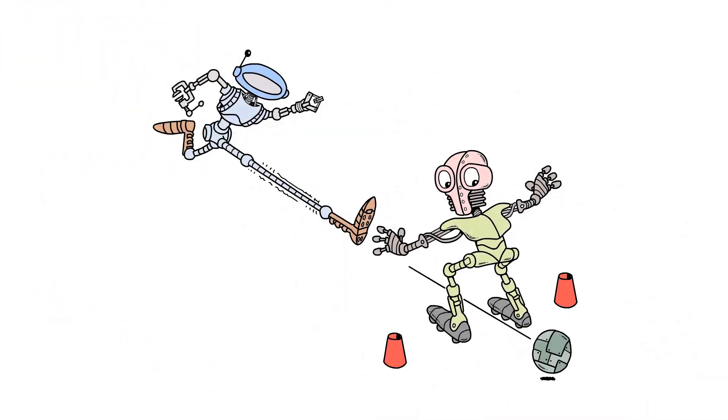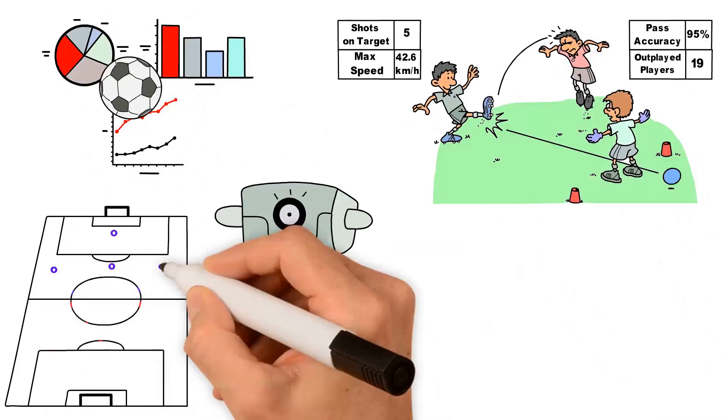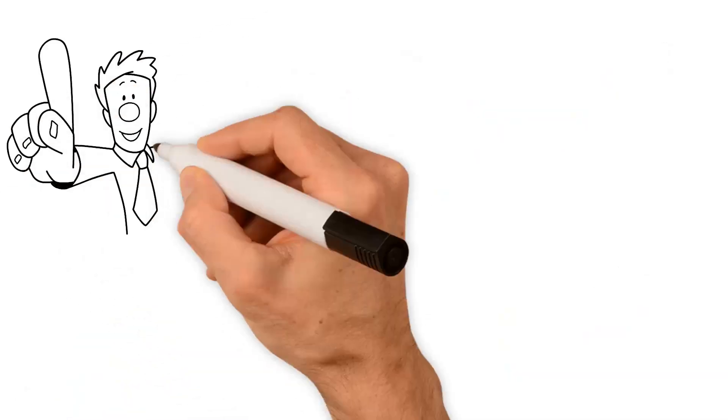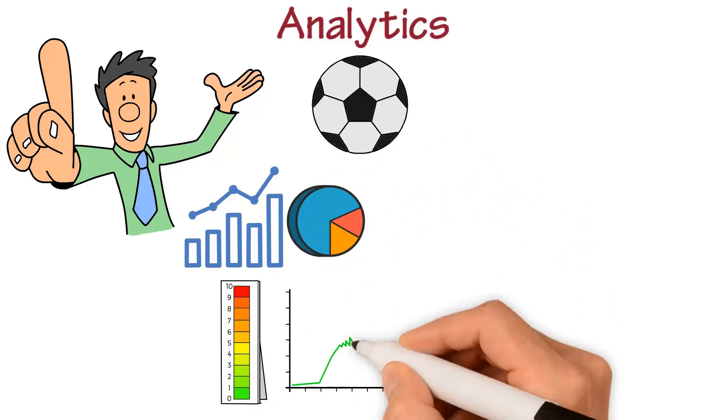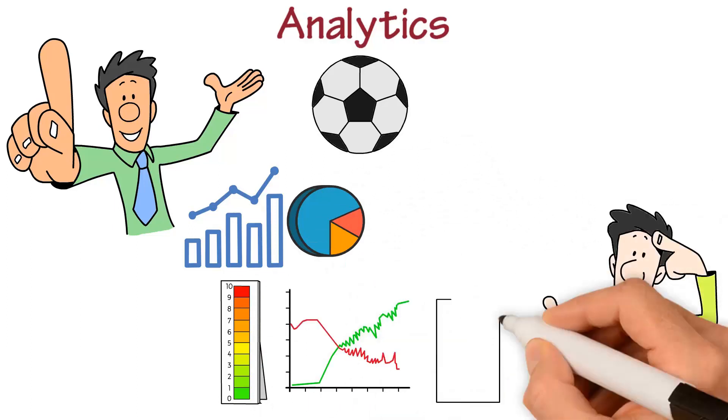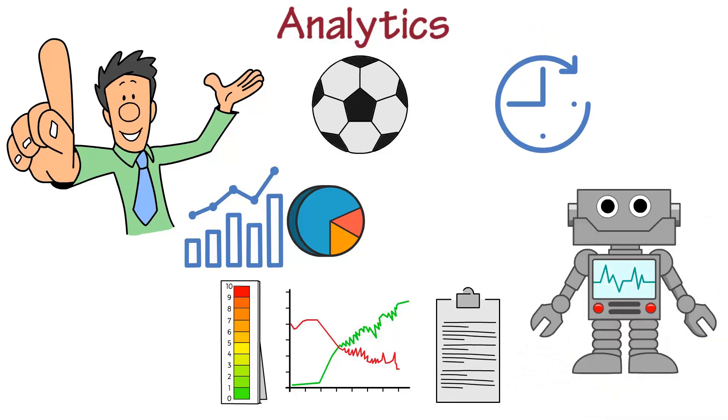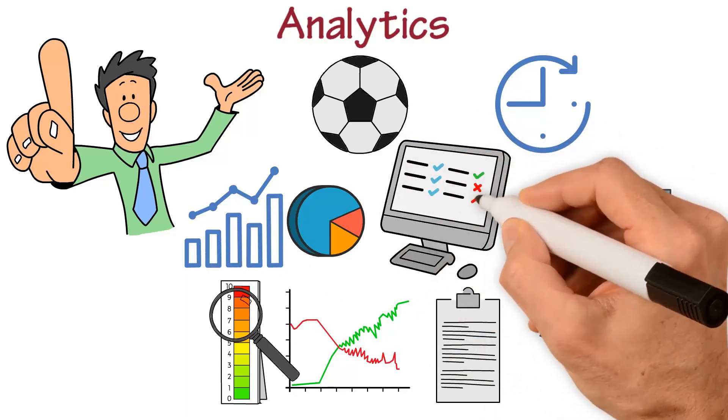From analytics and player performance tracking to tactical analysis and fan engagement, AI is making an impact. First and foremost, analytics have become an essential part of soccer. With an enormous amount of data generated during matches, it can be difficult for teams to extract valuable insights in real time. However, AI algorithms have simplified the analysis process by providing real-time insights into player performance and tactics, helping teams make informed decisions on and off the field.